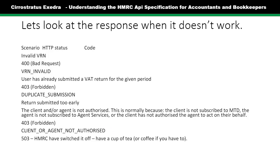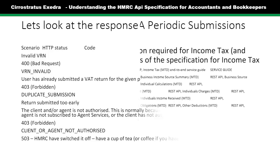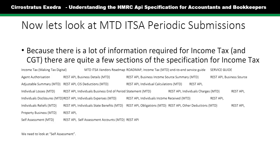Now, if we look at income tax — ITSA, income tax self assessment — that's a lot more complicated, simply because there's a lot more data required. You can have income tax, capital gains tax, property income, self employment information, things like venture capital trusts. And obviously if people don't have that sort of income or don't want to claim charitable contributions, you don't have to worry about providing that information to HMRC. But again, there are uses in being able to look at the specification.